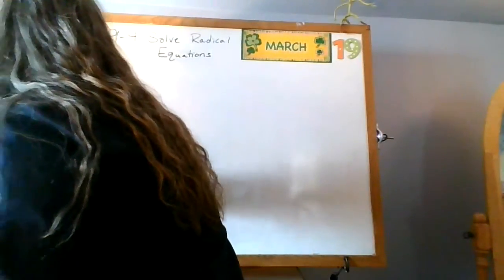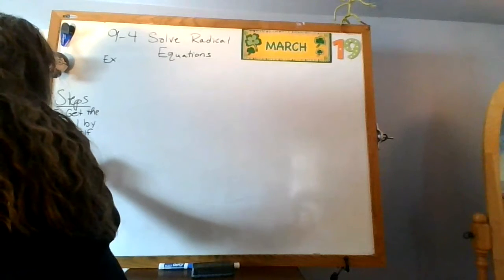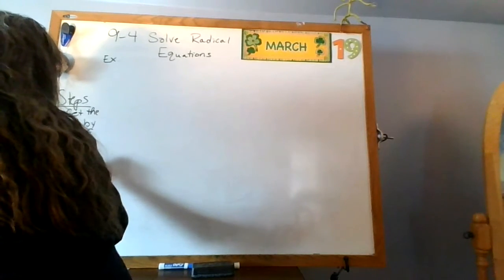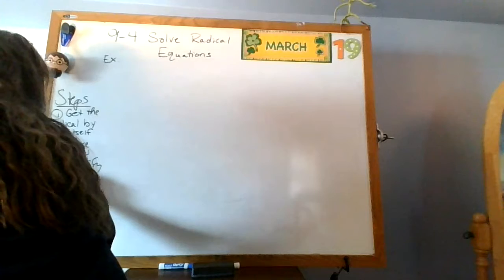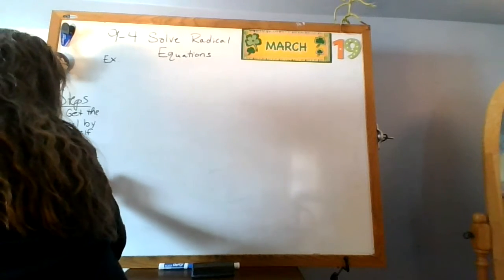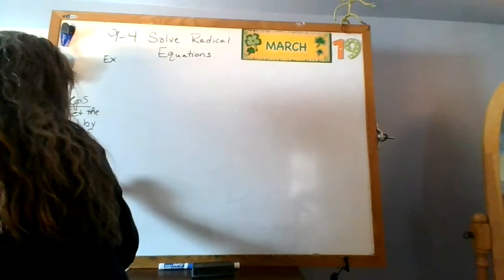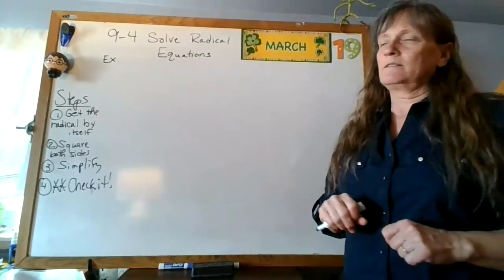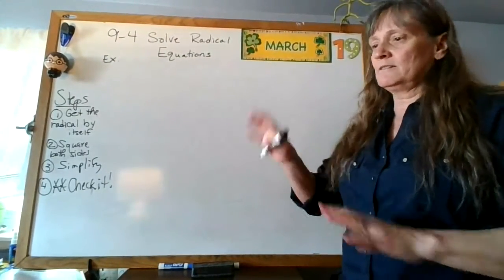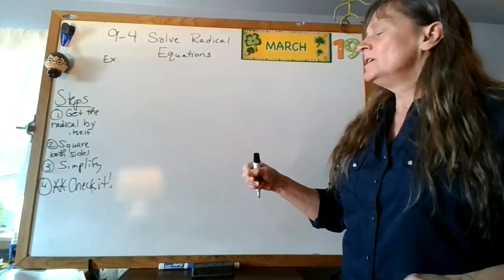And step four — three stars — check it. I should also say simplify in there. So erase that. Step three is simplify, and then step four is check it. Terrible handwriting — check it. Alright, I'm assuming you've all paused and done that; we're back together.